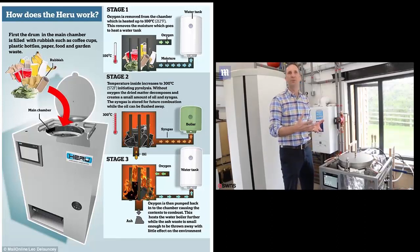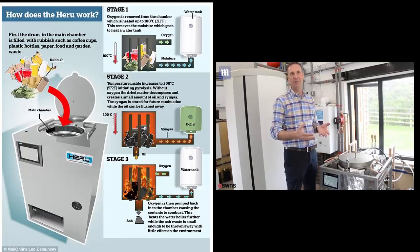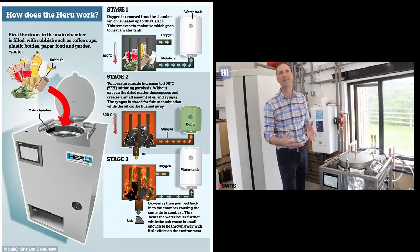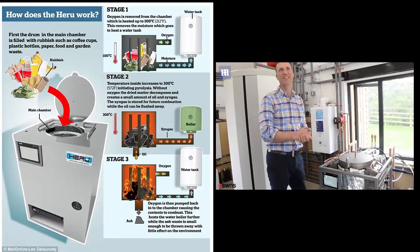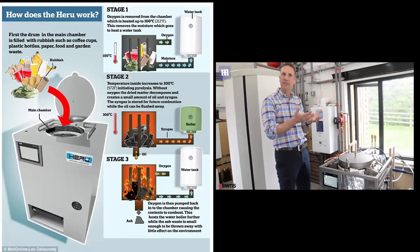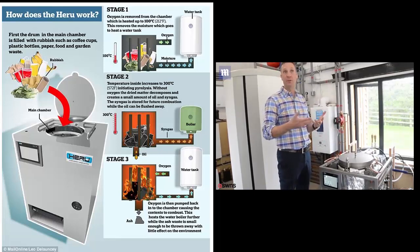Oxygen is then pumped back into the chamber and the pyrolyzed waste is burnt. The energy produced is used to heat the water in a boiler. After a full cycle, users simply flush the remaining ash, about a teaspoonful, down the drain. The process takes between 5 and 8 hours.